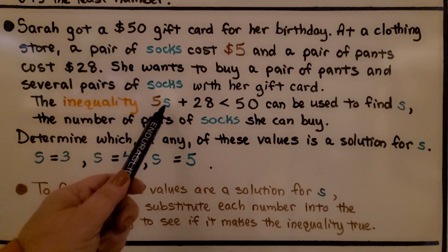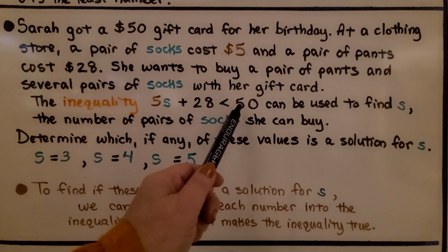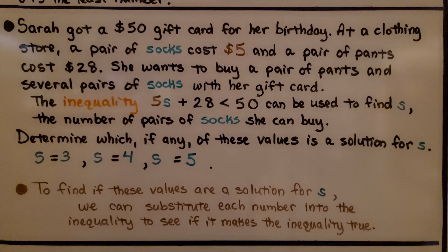The inequality, five times some unknown amount of socks, S, plus 28 is less than 50. The amount on her gift card can be used to find S, the number of pairs of socks she can buy. We determine which, if any, of these values is a solution for S.